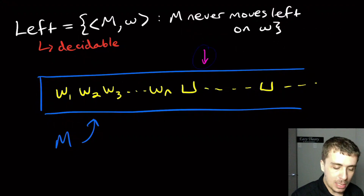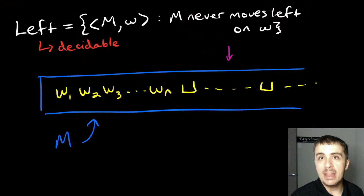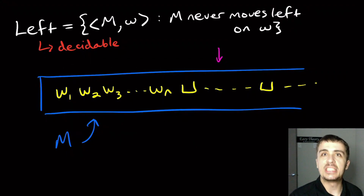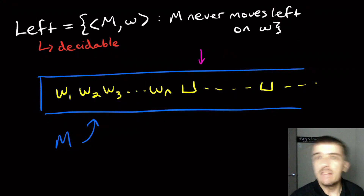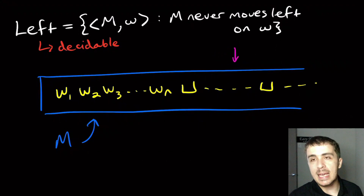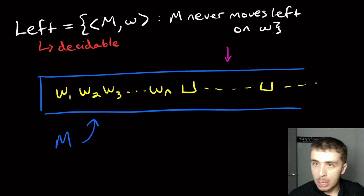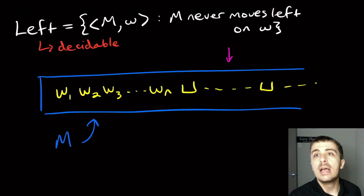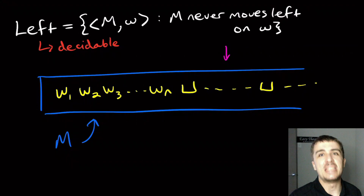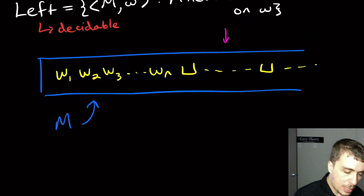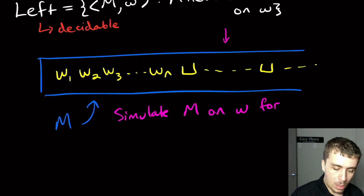Say there are a hundred states in this Turing machine. Then we can only do this right-moving thing a hundred times before we know we must have repeated a state — because we're only moving right. If at any point we move left we reject, but if we keep moving right and exhaust every possible state without ever moving left, then we know this Turing machine will never move left on input W.